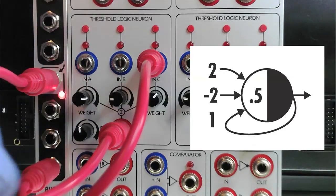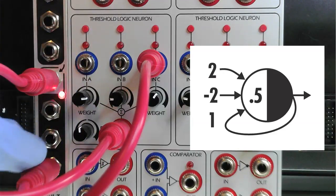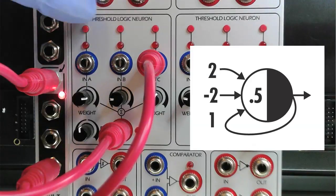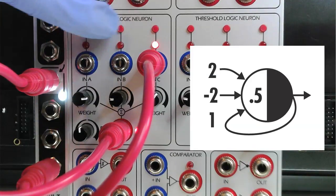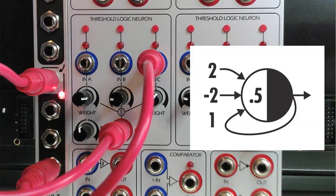As you can see, we have fed the output of the neuron back into the C input. A pulse of any duration at the A input will start a loop that can only be stopped by pulsing the B input.